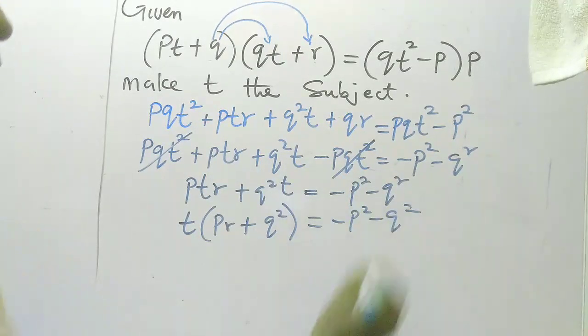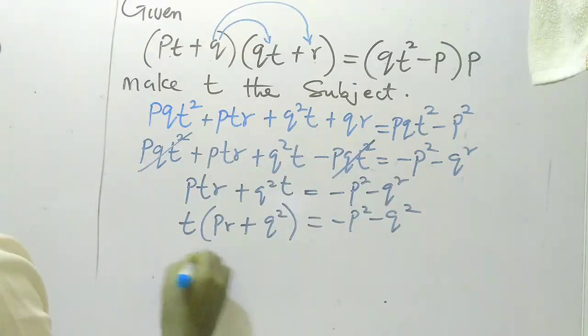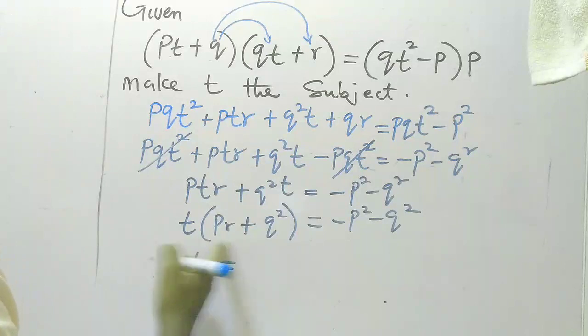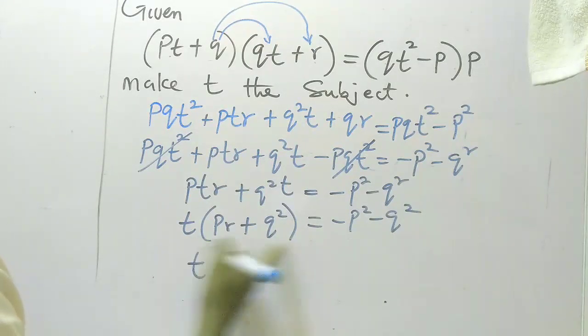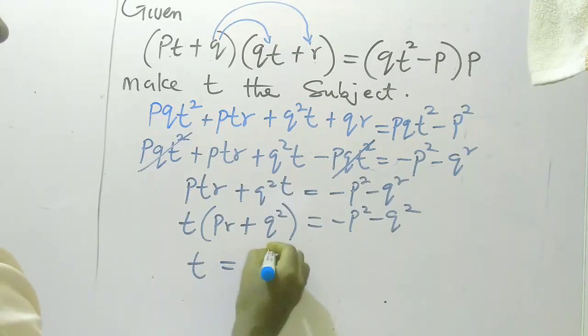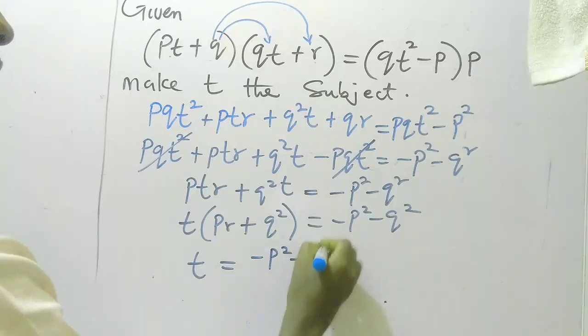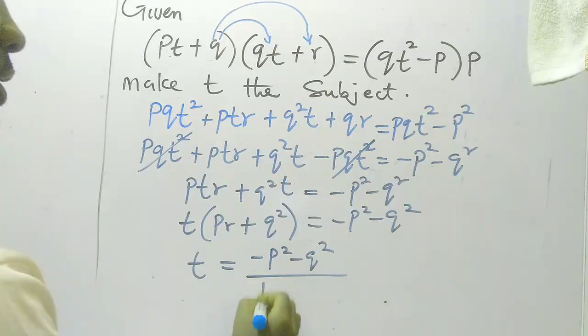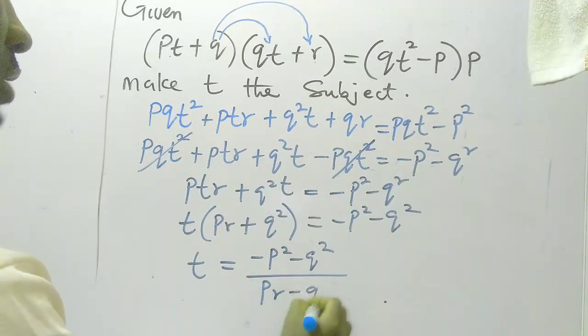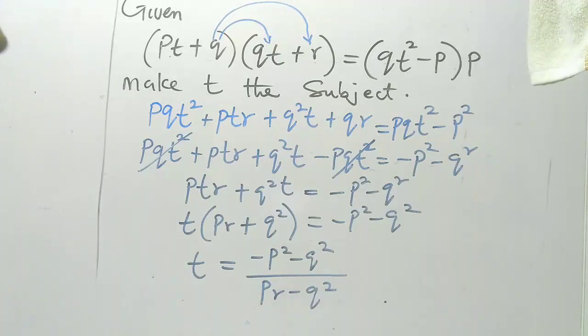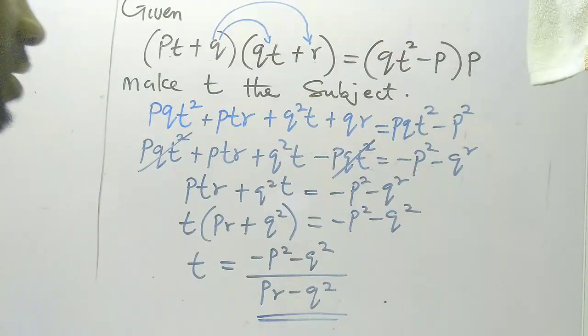And then lastly, to get t I'm going to divide both sides by this term in the bracket, so that will become -p² - q² all over pr + q². So this is our solution to this problem. Nothing else can divide, so we stop here.